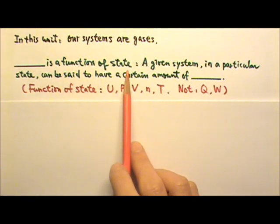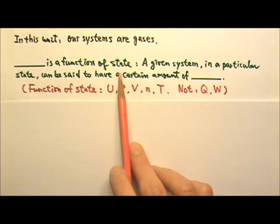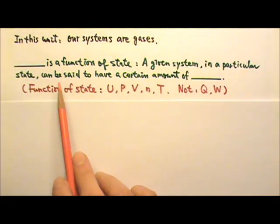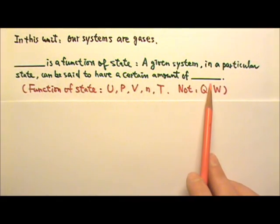A function of state or a state function is a property of a system that depends only on the state of the system. So if I say something is a function of state, it means a given system in a particular state can be said to have a certain amount of that thing.